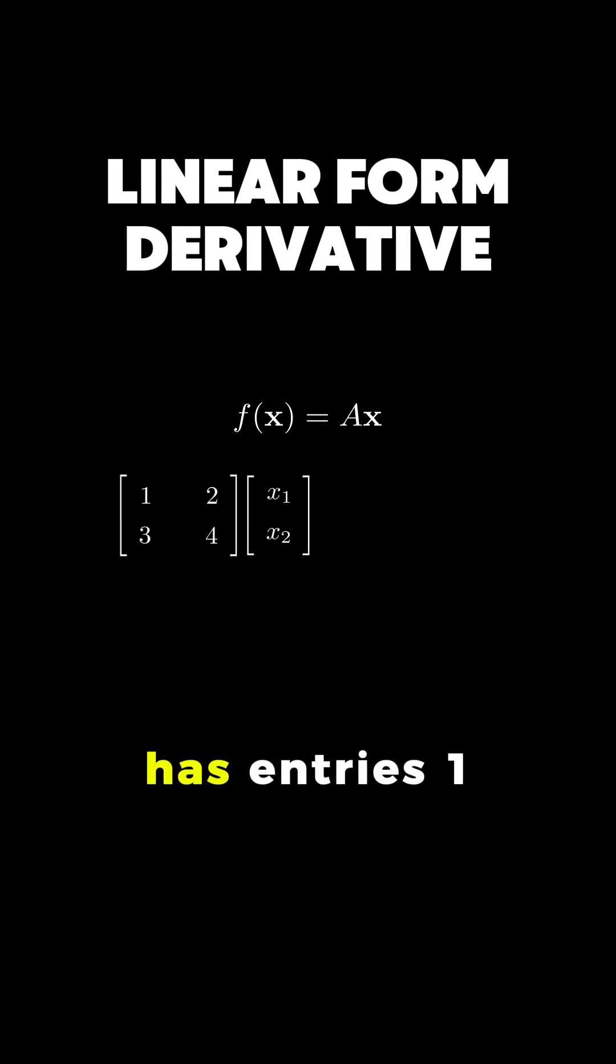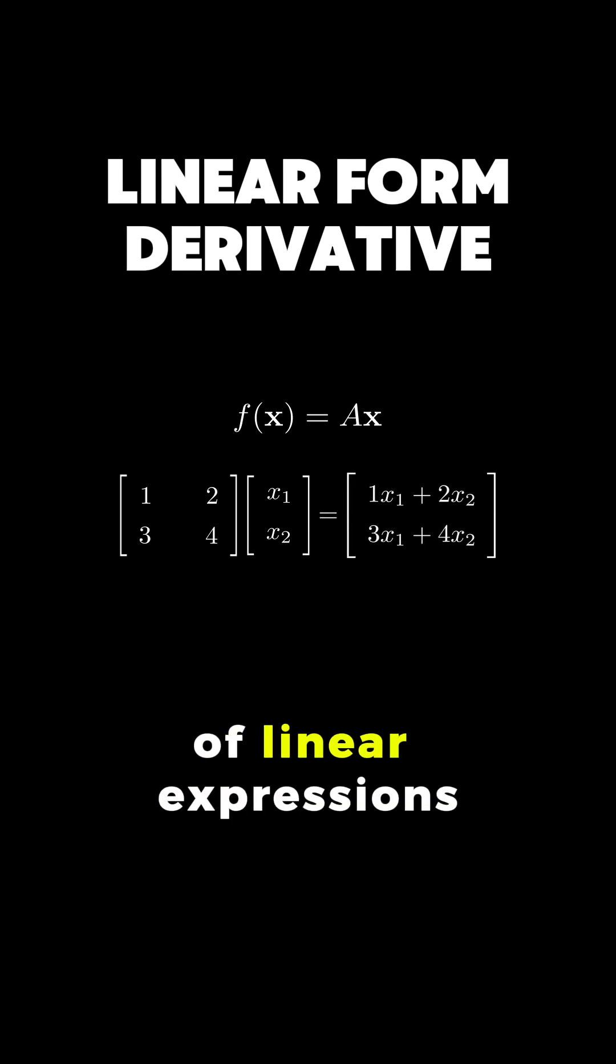If matrix A has entries 1, 2, 3, 4 and vector X has components X1 and X2, the product results in a system of linear expressions. The first component is X1 plus 2X2 and the second is 3X1 plus 4X2.